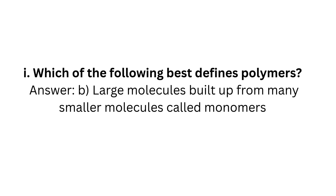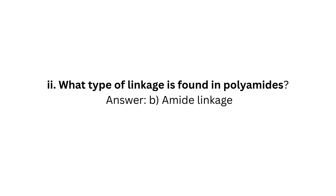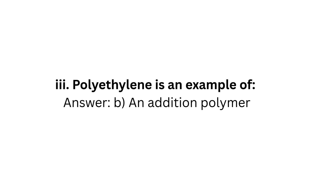Question 1: Which of the following best defines polymers? Answer: B — Large molecules built up from many smaller molecules called monomers. Question 2: What type of linkage is found in polyamides? Answer: B — Amide linkage. Question 3: Polyethylene is an example of? Answer: B — An addition polymer.